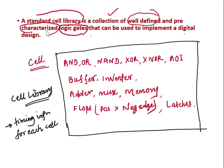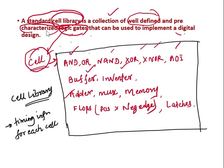These logic gates are called cells. All these cells — or basic components — are present inside the cell library. The cells available to implement digital designs include AND, OR, NAND, XOR, XNOR, AOI, buffer, inverter, adder, mux, memory, flops — including positive-edge and negative-edge flip-flops and latches — and many more.